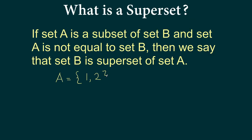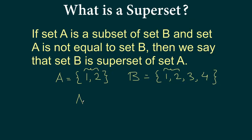So if we have set A that contains 1 and 2, and set B that contains 1, 2, 3, and 4 — clearly all of the elements in A are also elements of B, but B has more elements. So here we say that set A is a subset of B, and we notice that set A is not equal to set B. We say A is a subset of B, and we say that B is a superset of A.